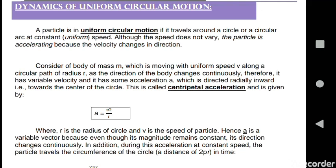Let's start from the first paragraph. Here a particle is in uniform circular motion if it travels around a circle or a circular arc at constant uniform speed. We have a body that is traveling, rotating uniformly in a circular path, so that's why its speed is uniform, meaning the speed is not changing.